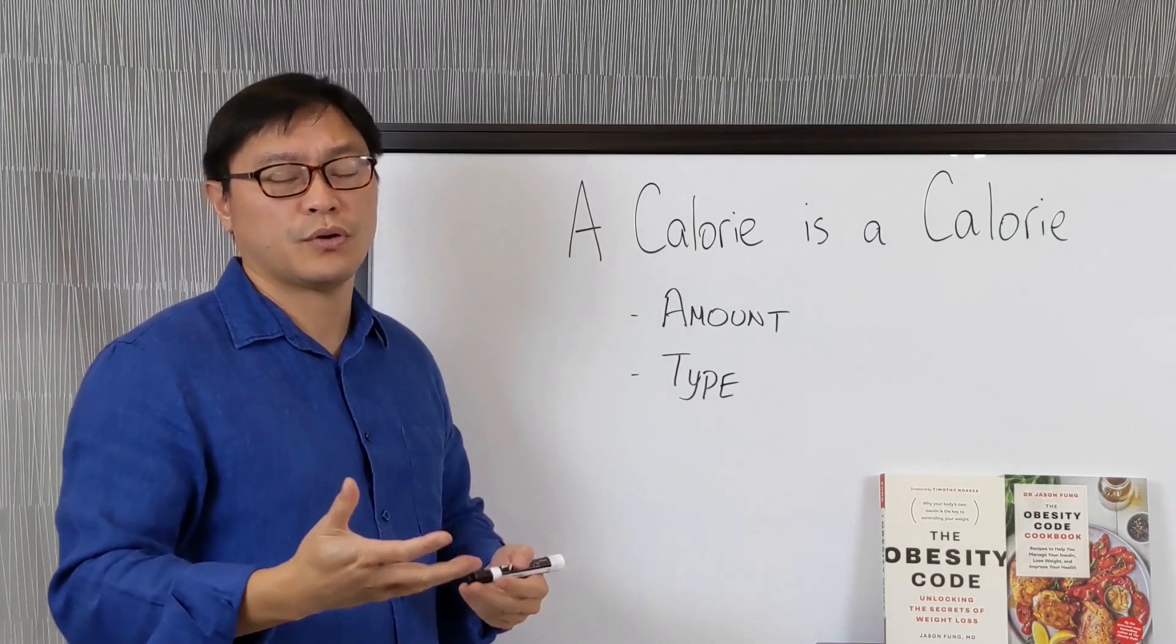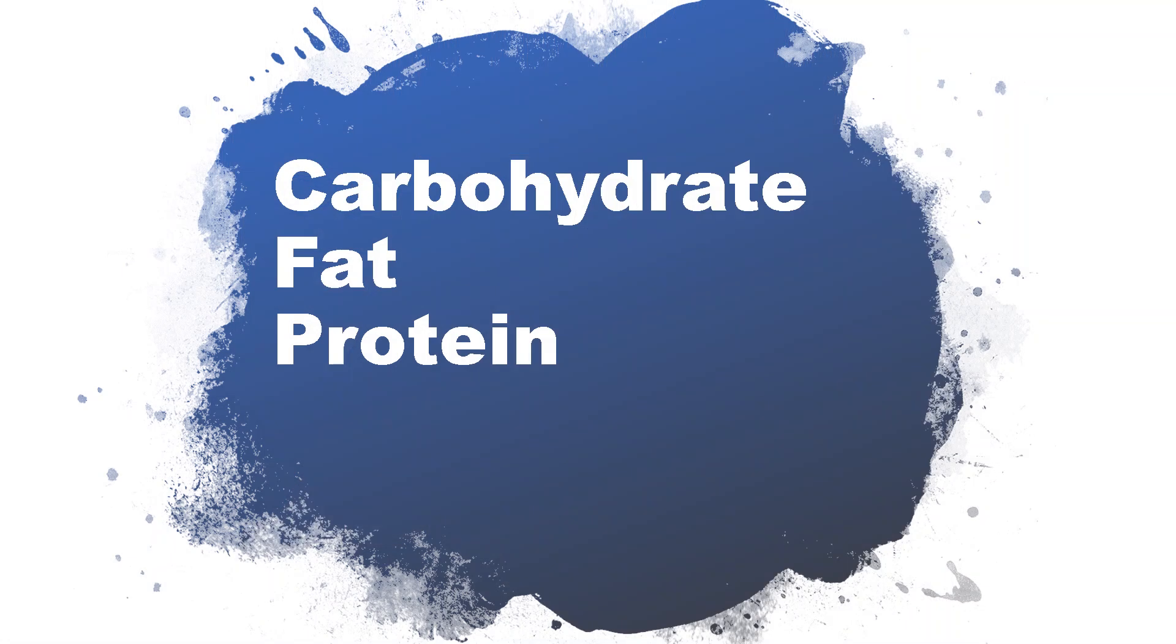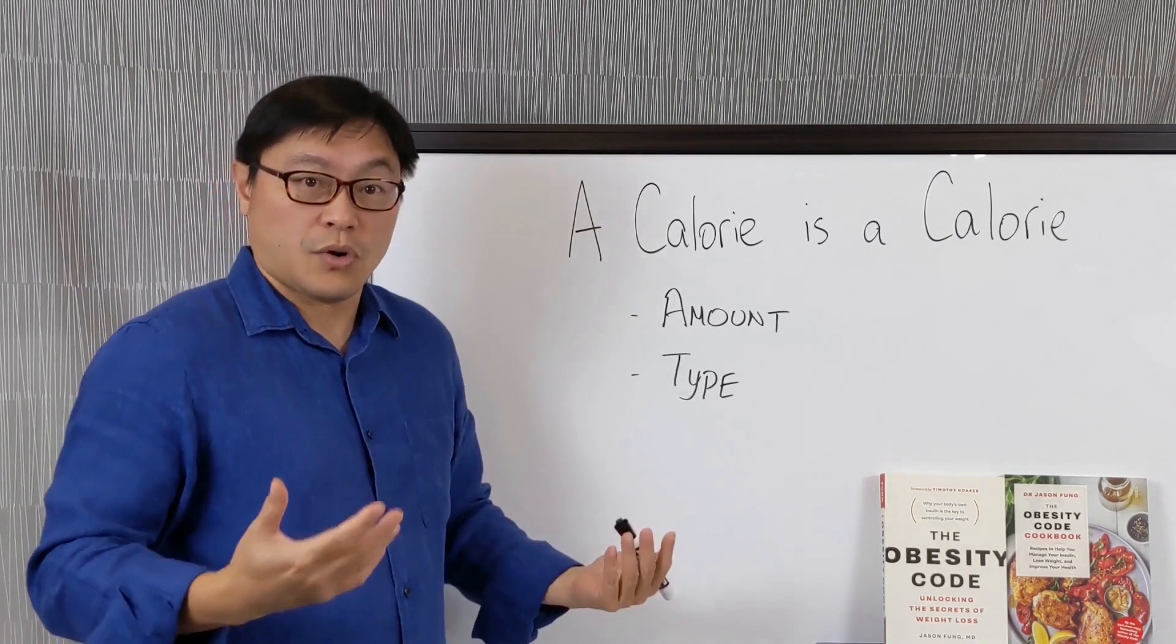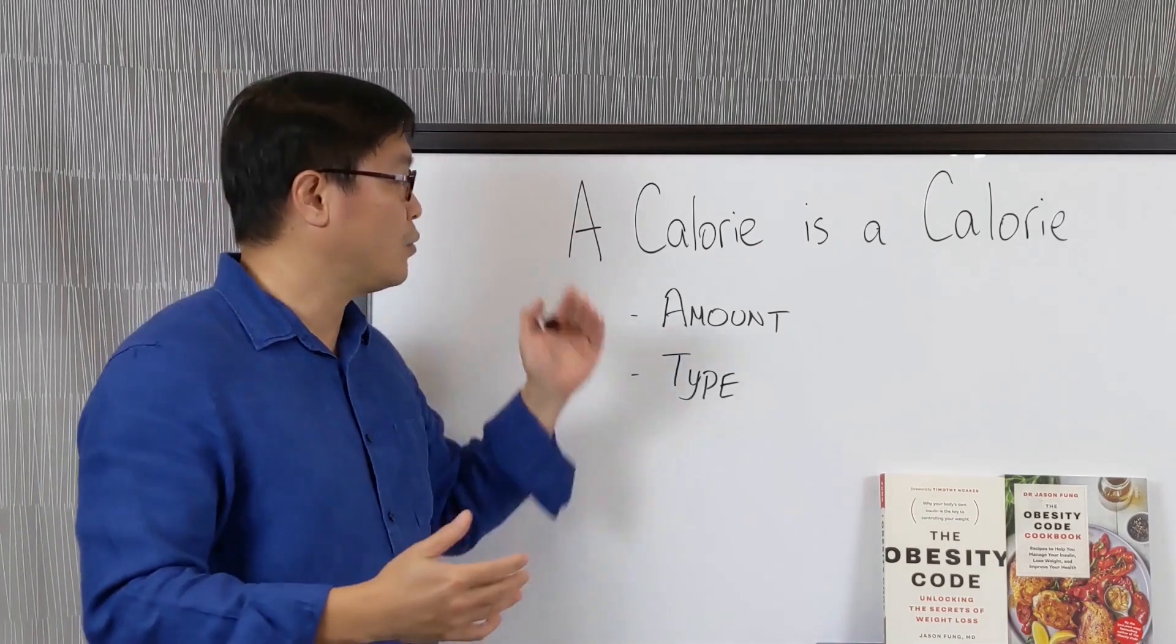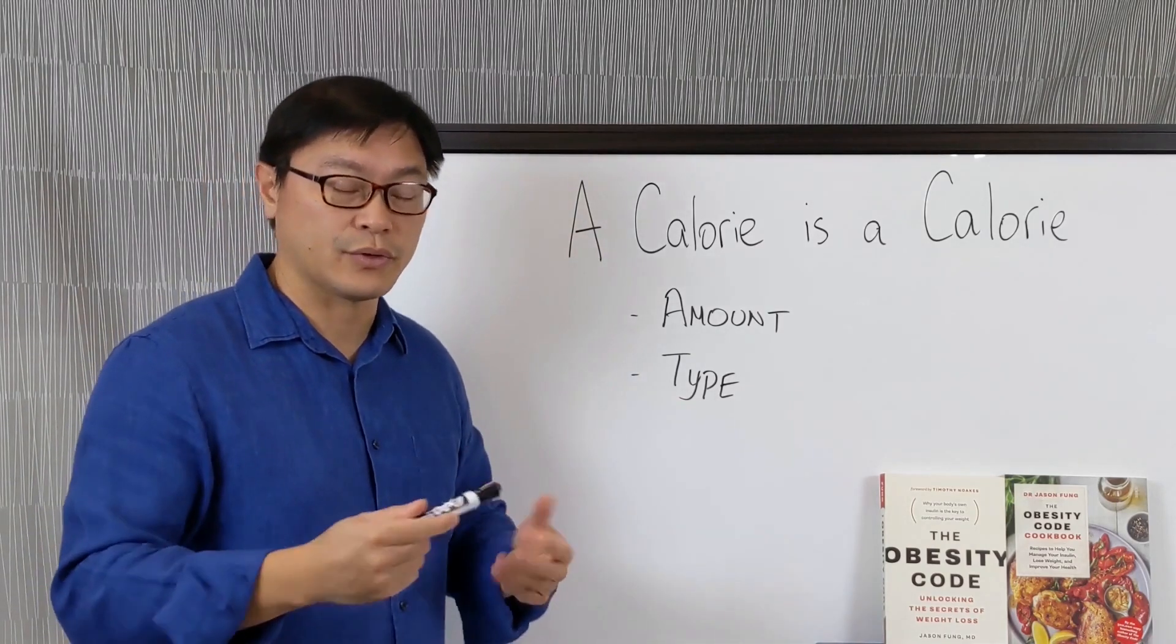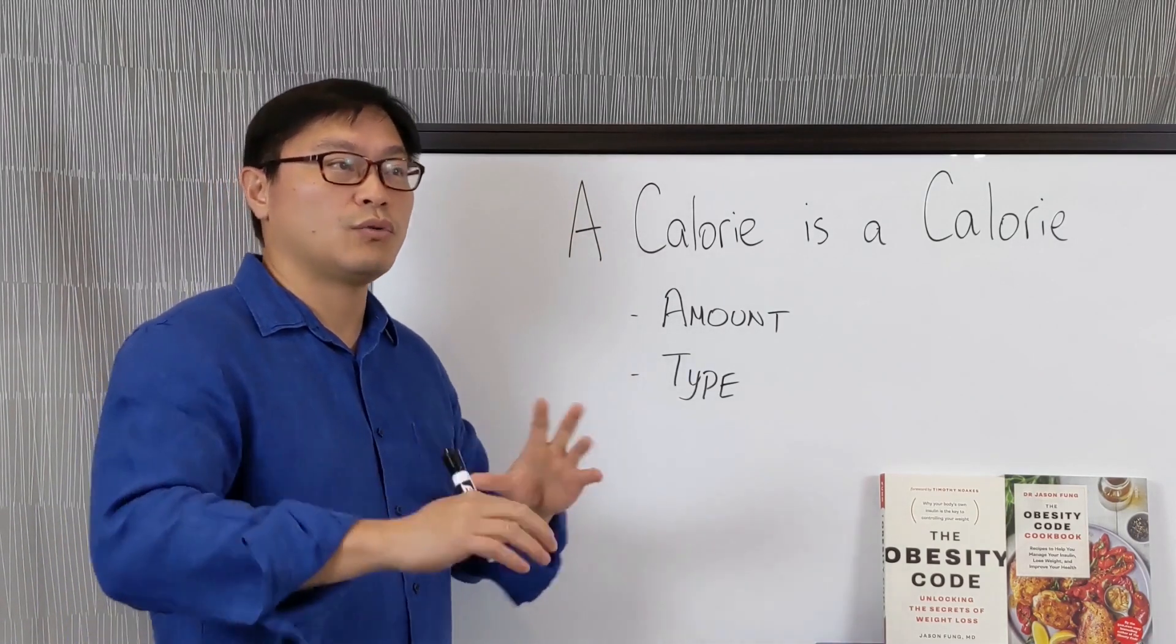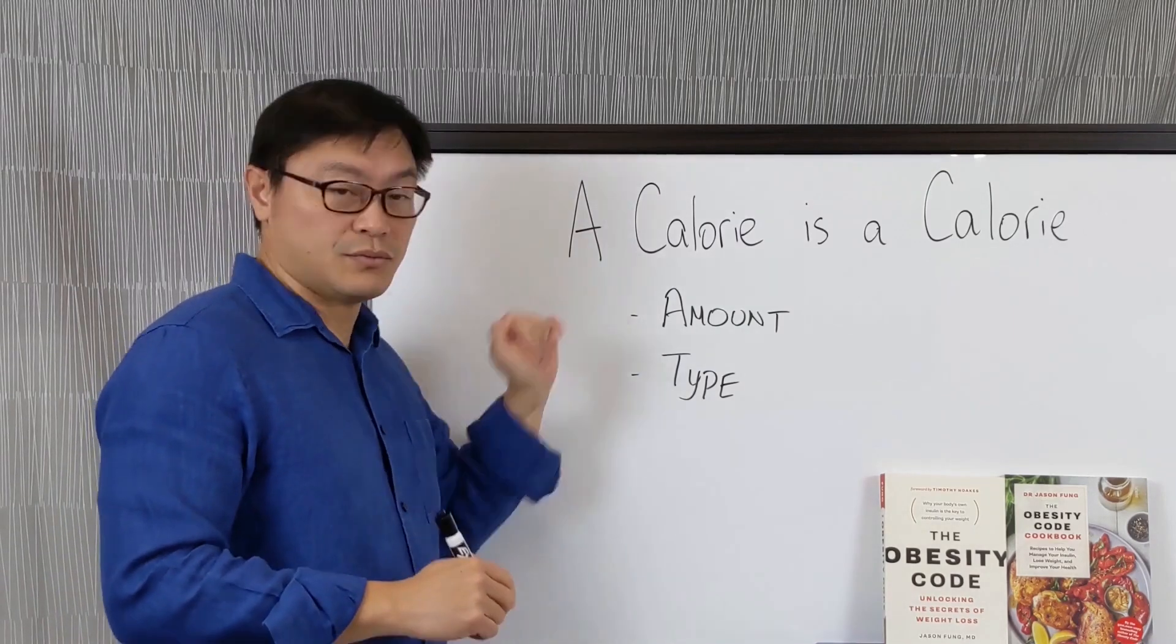Because remember, foods are composed of three different macronutrients. There's carbohydrates, there's fats, and there's proteins. When we eat them, they all have different effects on our body. But in terms of gaining and losing weight, what the people who say a calorie is a calorie say is that it really only depends on the amount of calories.